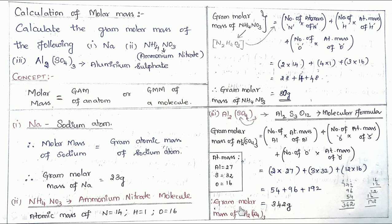342 grams is the gram molecular mass — or gram molar mass — of aluminium sulfate. I hope my dear students you have understood this calculation of molar mass. Subscribe for more videos. Chemistry concepts made easy here. Thank you.